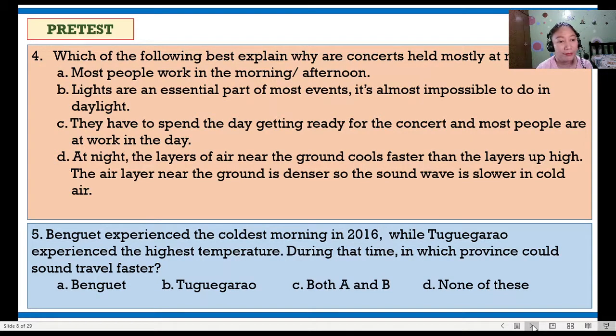And last, for number 5. Benguet experienced the coldest morning in 2016, while Tugigarau experienced the highest temperature. During that time, in which province could sound travel faster? A. Benguet B. Tugigarau C. Both A and B D. None of these.